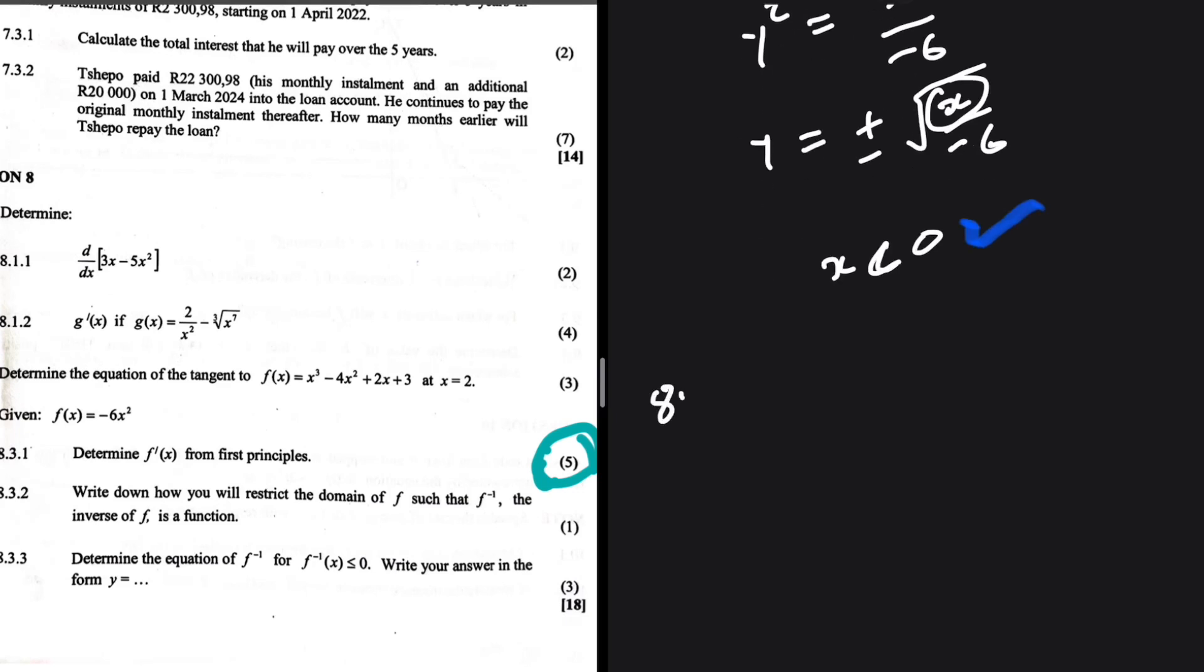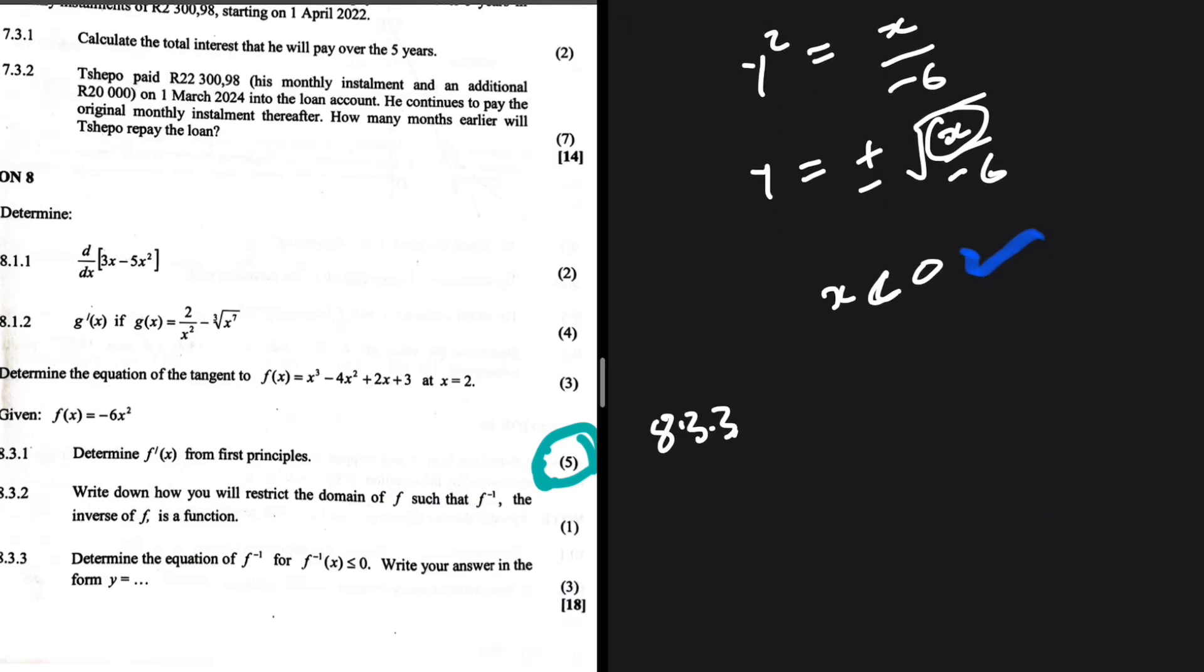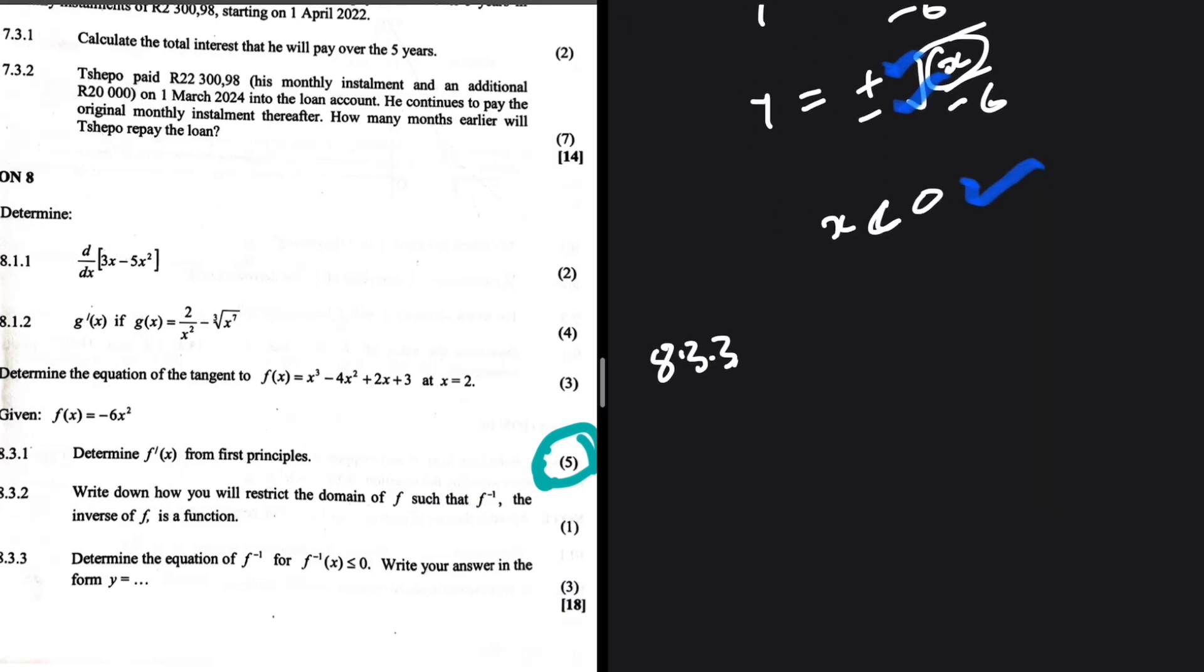8.3.3. Determine the equation of f inverse for which f inverse is less or equals to 0. Write your answer in the form y is equal to. So you can see, we have a plus or minus. If we need it to be less than 0, this is the option that we need to take. f inverse of x is equals to minus the square root of x divided by minus 6. Here we go.